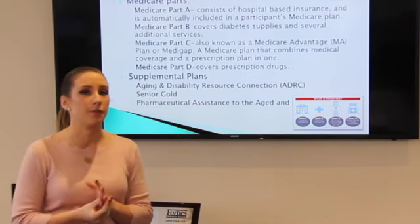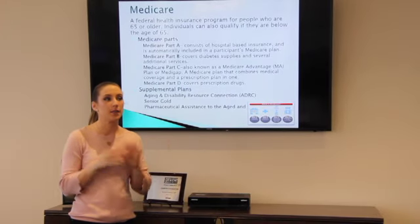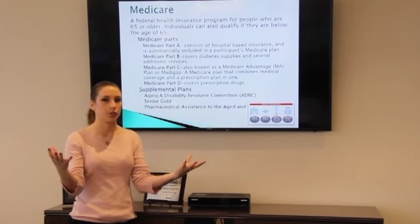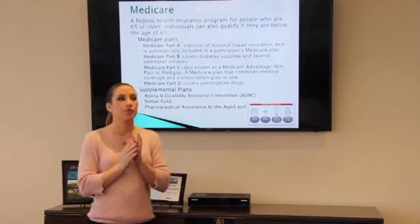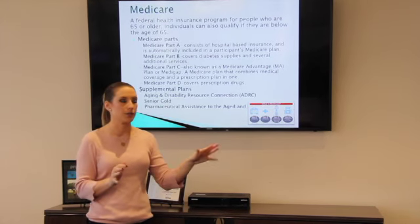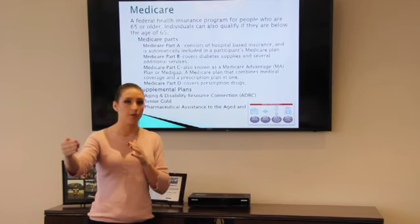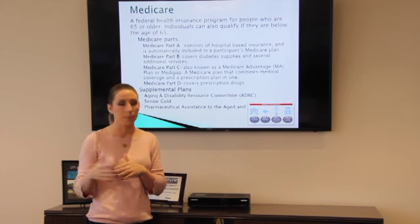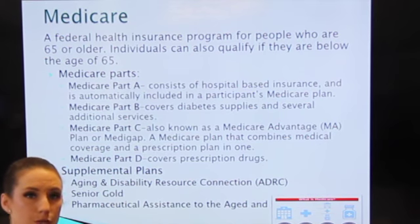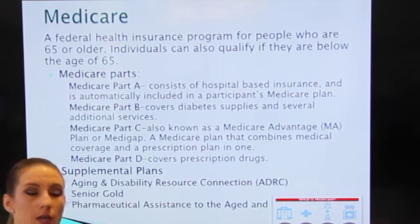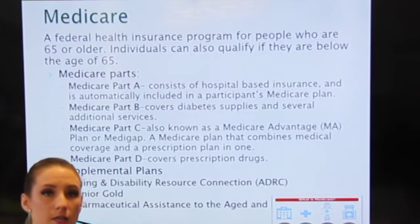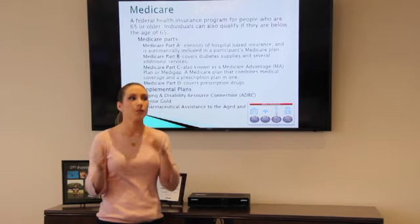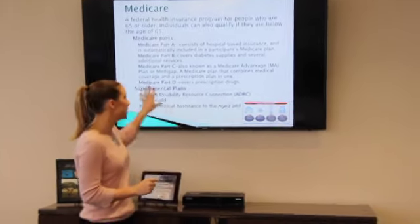Part C is known as Medicare Advantage or Medigap. It's basically a bundle of your medical insurance and prescription insurance all in one. This is what they refer to as a PPO or Preferred Provider Organization. These plans have set doctors they prefer their patients to see, and if they go outside of those doctors, it's a higher cost to the patient. So Part C is a bundle of both medical and prescription, whereas Part D is just prescription only.